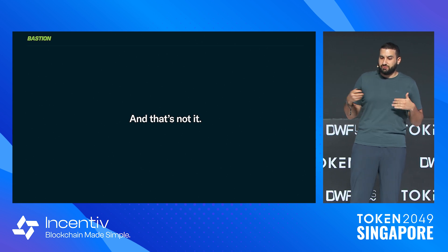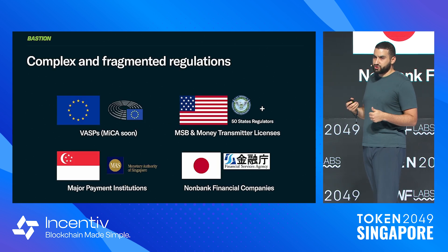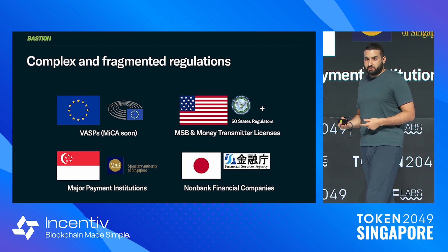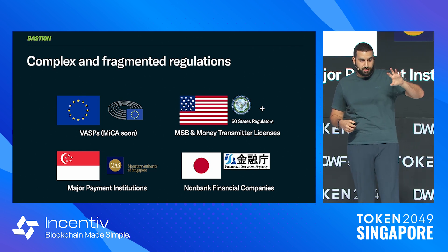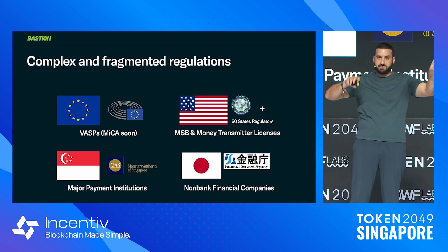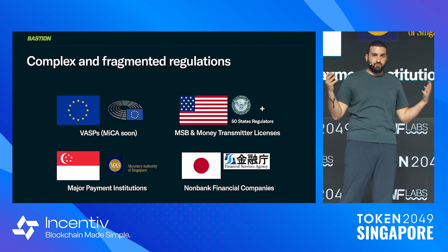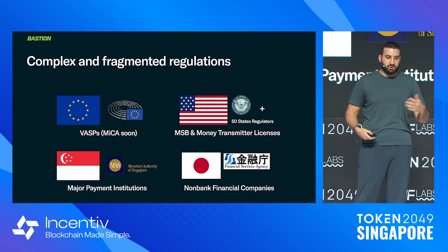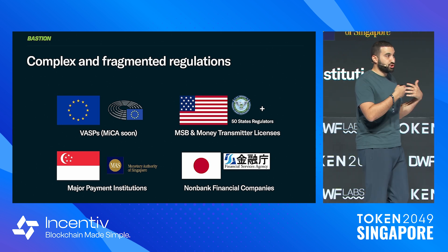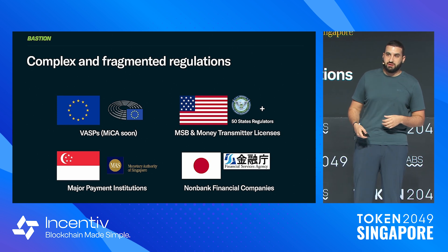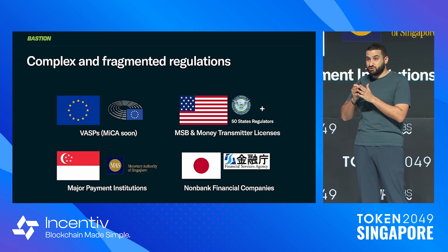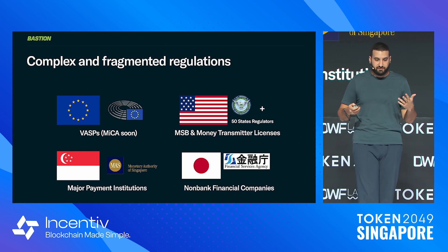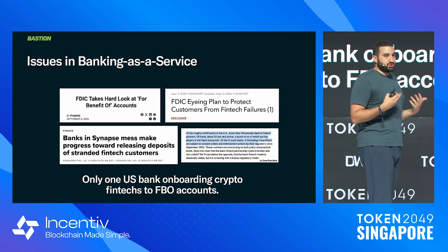There are a lot of issues happening right now that very few people are aware of. The first is that regulations are extremely complex and fragmented — as shown here, four different frameworks: Europe, the US, Singapore, and Japan — all completely different. If you want to be a regulated wallet provider, you need to go talk to every single one of these regulators. Even in the US, you have to register with every 50 state regulators independently. Very complex.